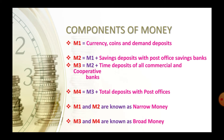M2 is equal to M1 plus saving deposits with post office banks. M2 covers regular banks like time saving accounts, recurring deposit accounts, and time deposit accounts. Here we also count the post office savings. M3 is equal to M2 plus time deposits at commercial and cooperative banks.